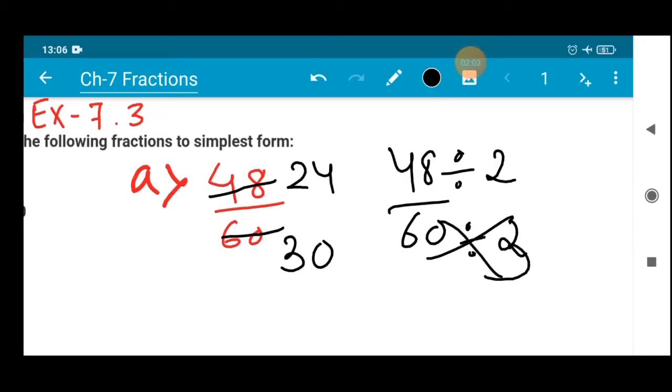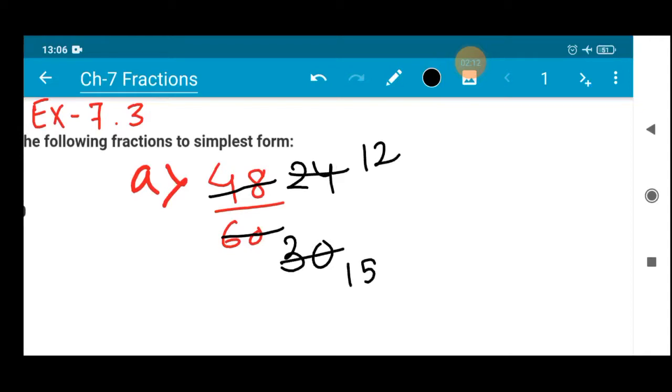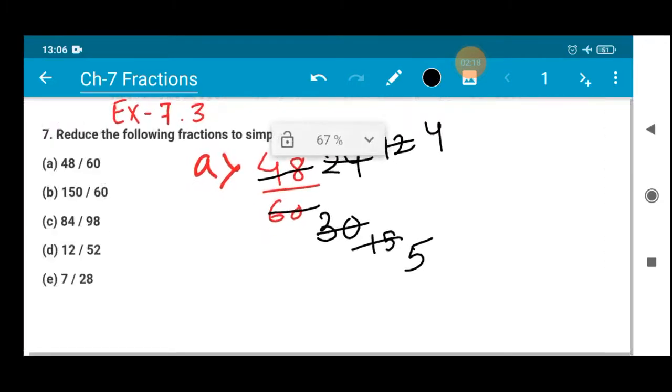It cannot be divided with 3. The same number should be divided. Same number should be chosen to divide both numbers. Next, 2 twelves are 24, 2 fifteens are 30. Now 3 fours are 12, 3 fives are 15. Both numbers should be divided by the same number.